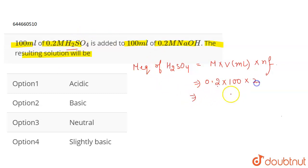So we have basically 40 milliequivalence for H2SO4.